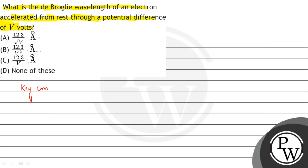So in this question, the key concept is that if a de Broglie wavelength, if there is an object, then we move something from V volts.